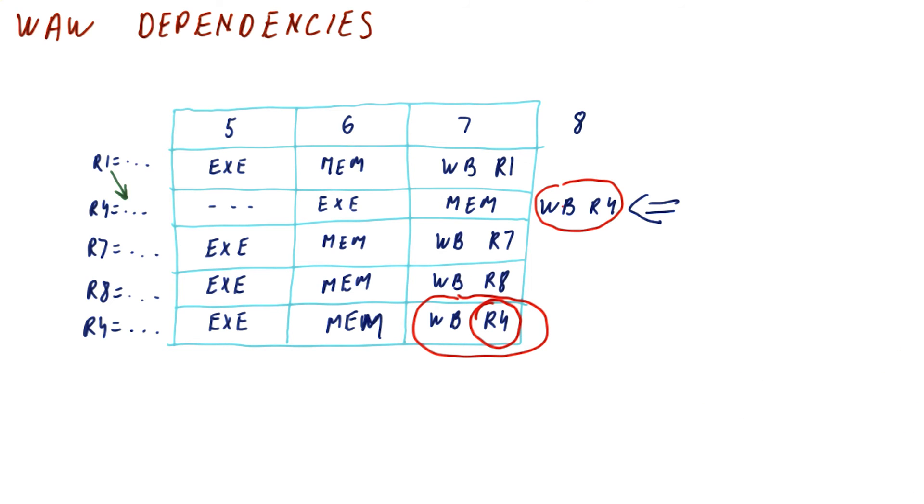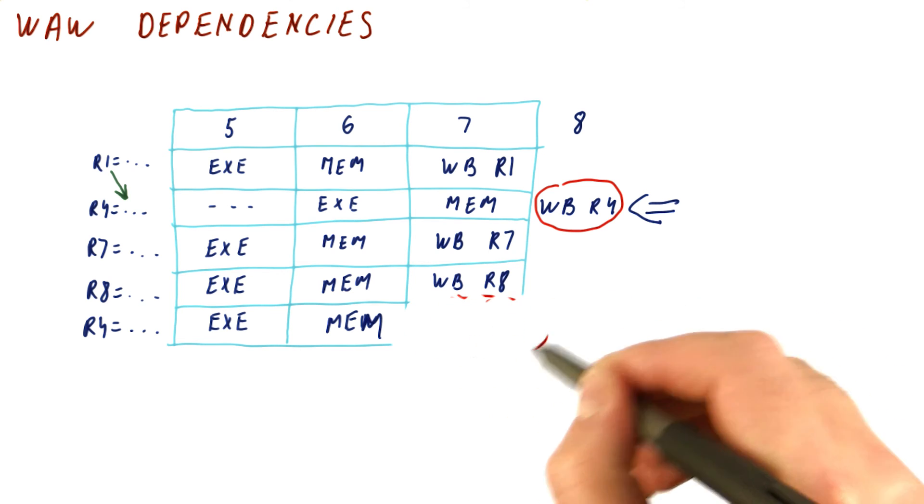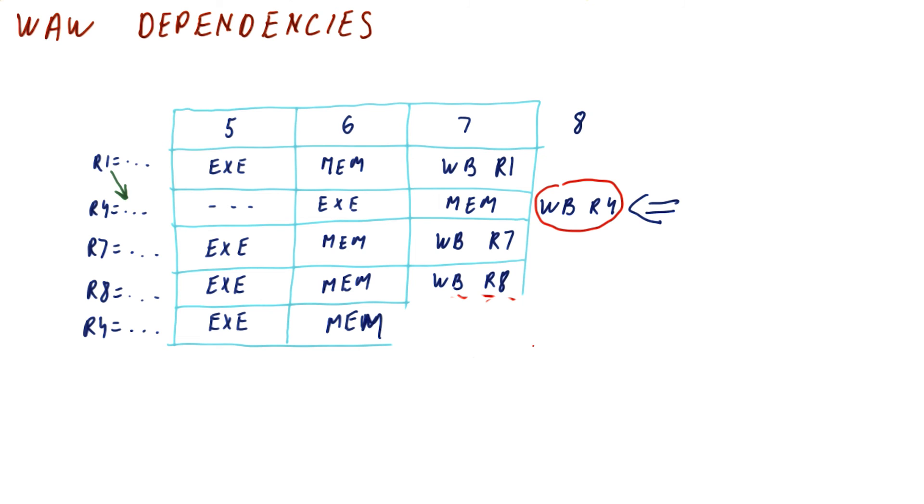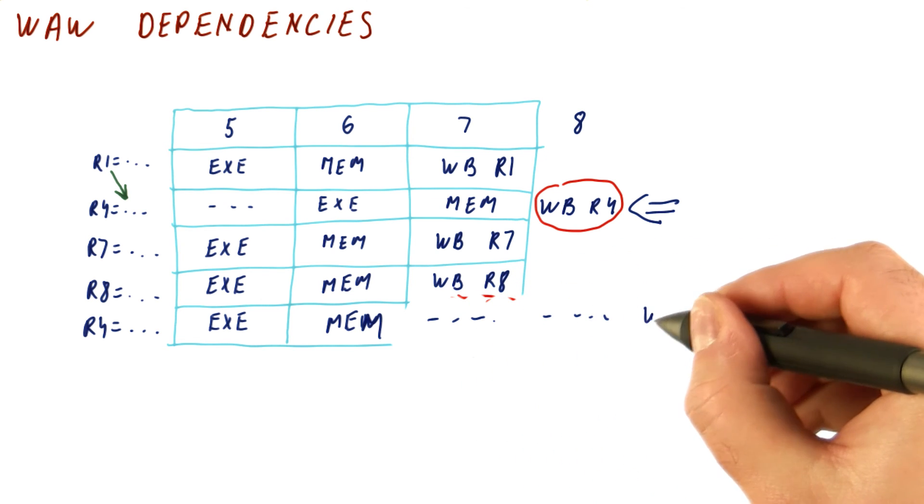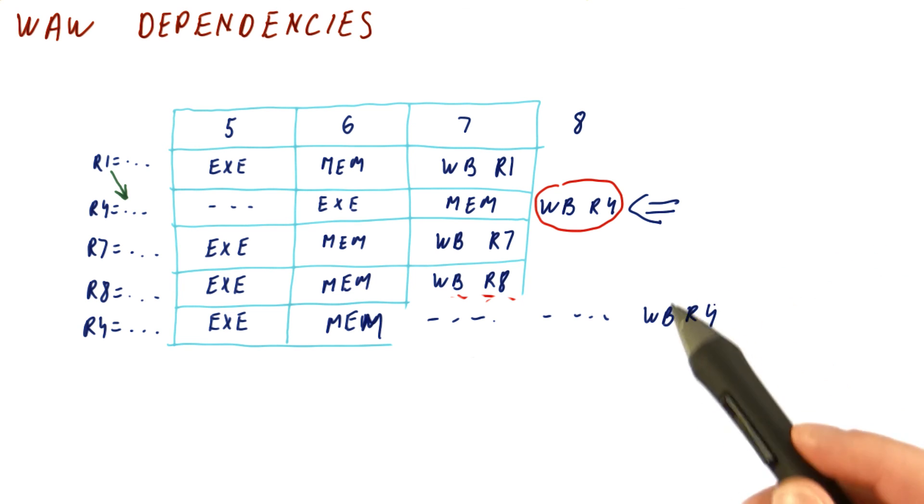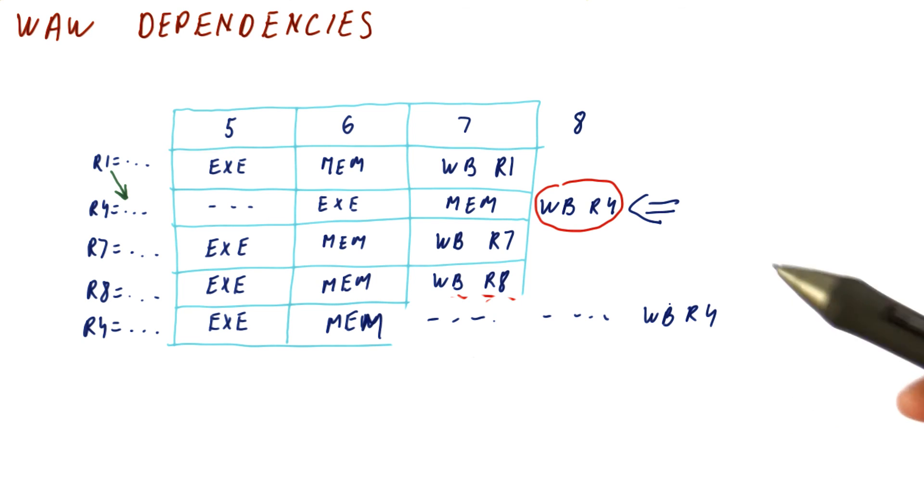So in order to fix this, one solution would be to not have this instruction write the result here. Instead, it would have to be stalled here and here, and finally write its result here. So a real processor might, in some way, need to figure out how to do this, because these writes need to happen in the correct order.